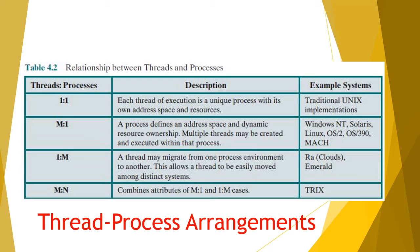Two more evolving arrangements exist. In the one-to-many arrangement, one thread can belong to many processes and can migrate between processes — examples are the Ra kernel, Clouds OS, and Emerald OS. In the many-to-many arrangement, one process can have many threads and threads can migrate between processes — an example is the Trix operating system.